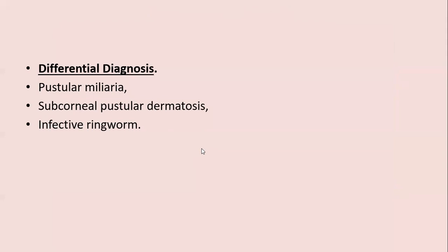Differential diagnosis of folliculitis: pustular miliaria differs in that it is not folliculocentric, as pustular miliaria is an infection of the sweat coils and is very perifollicular. Subcorneal pustular dermatosis is characterized by large pustules, and infective ringworm usually shows pustules in an annular configuration.